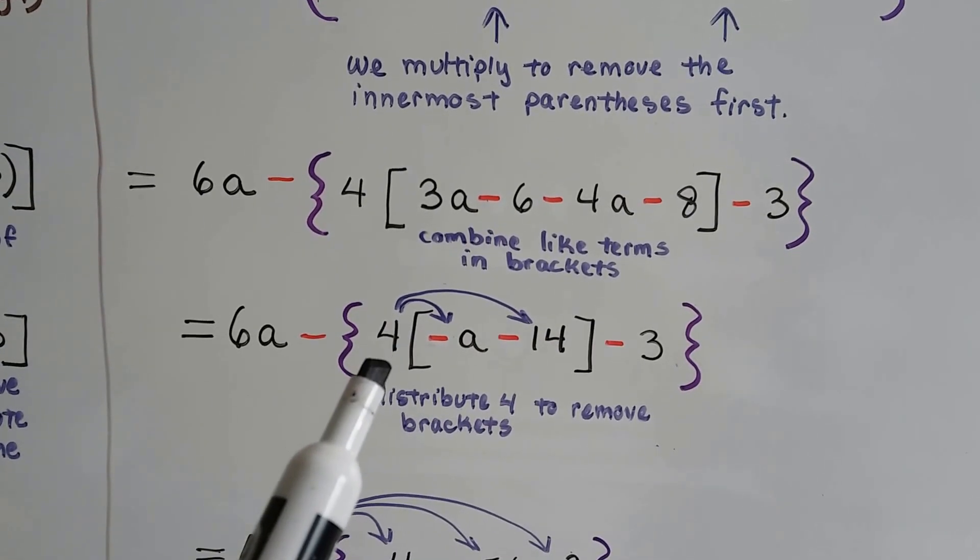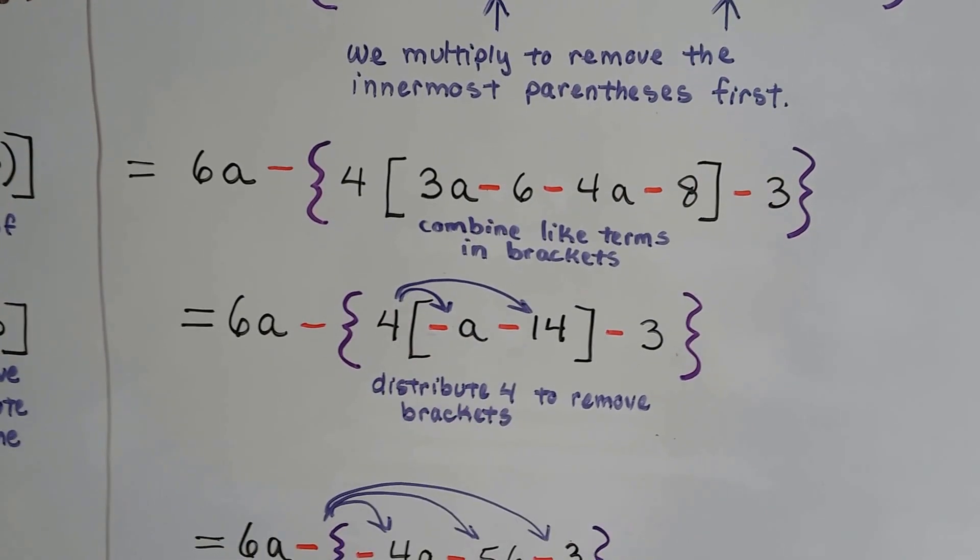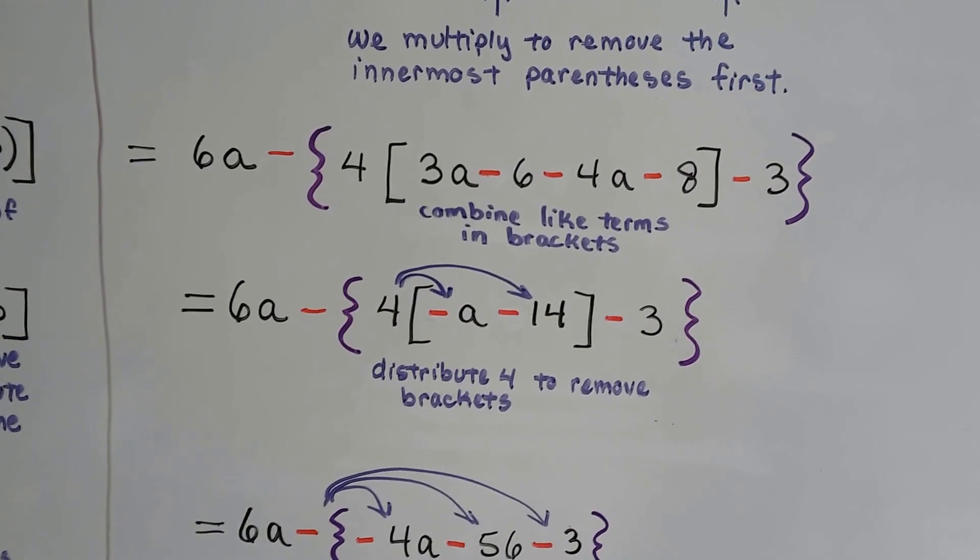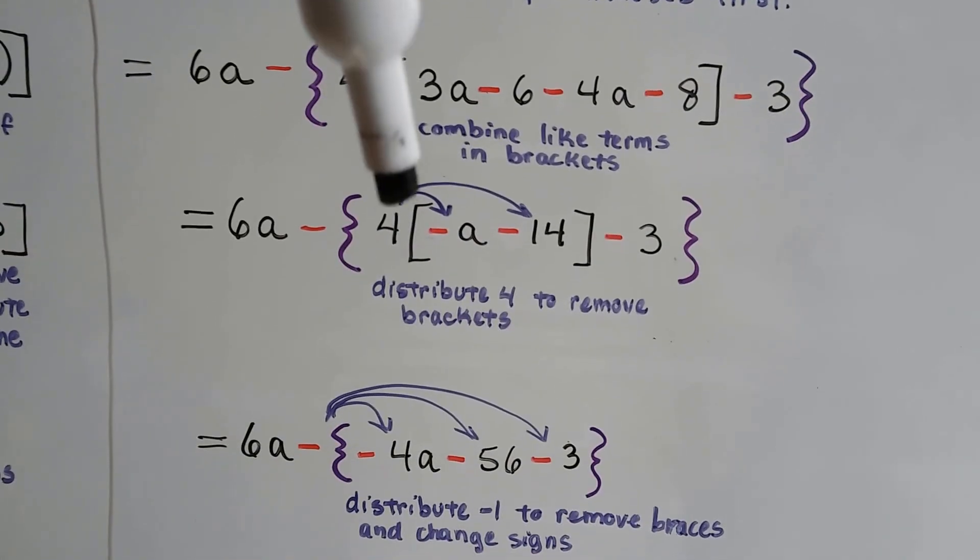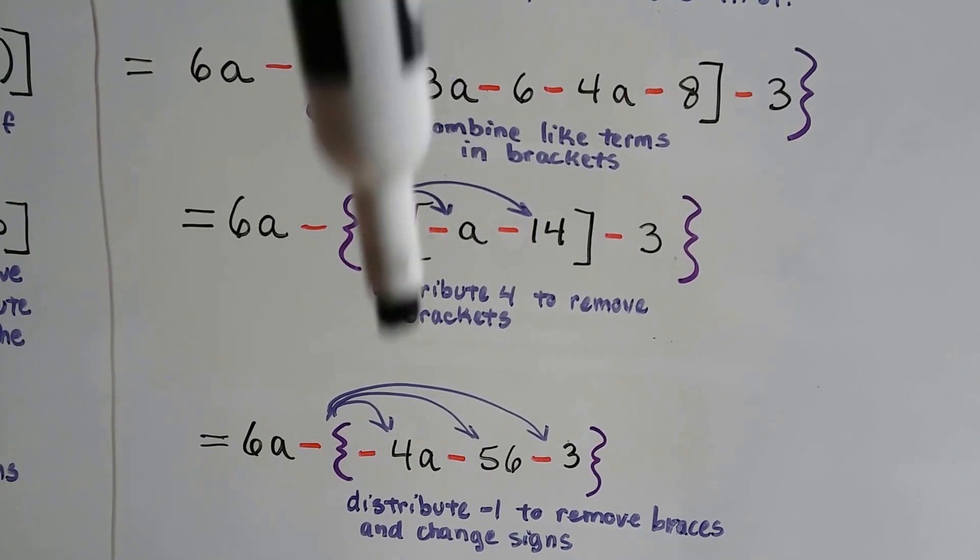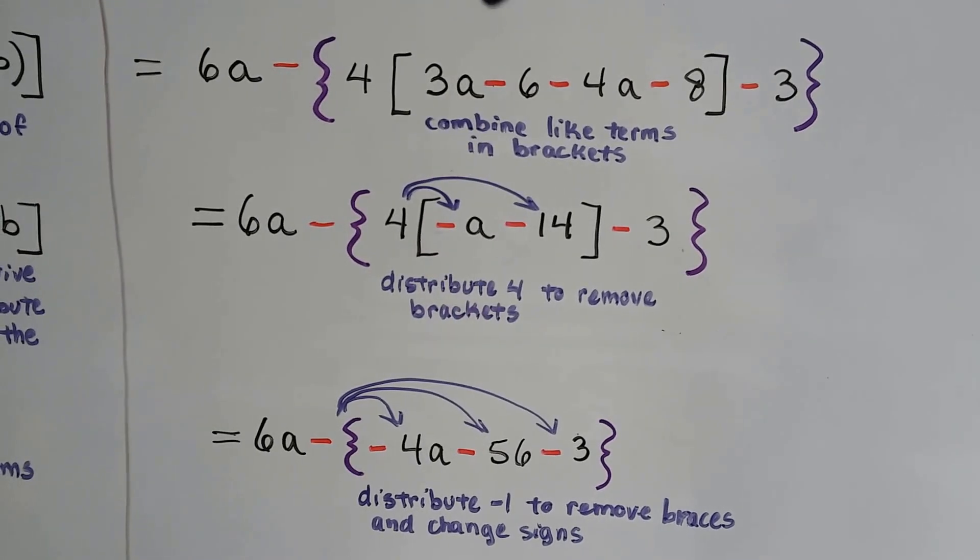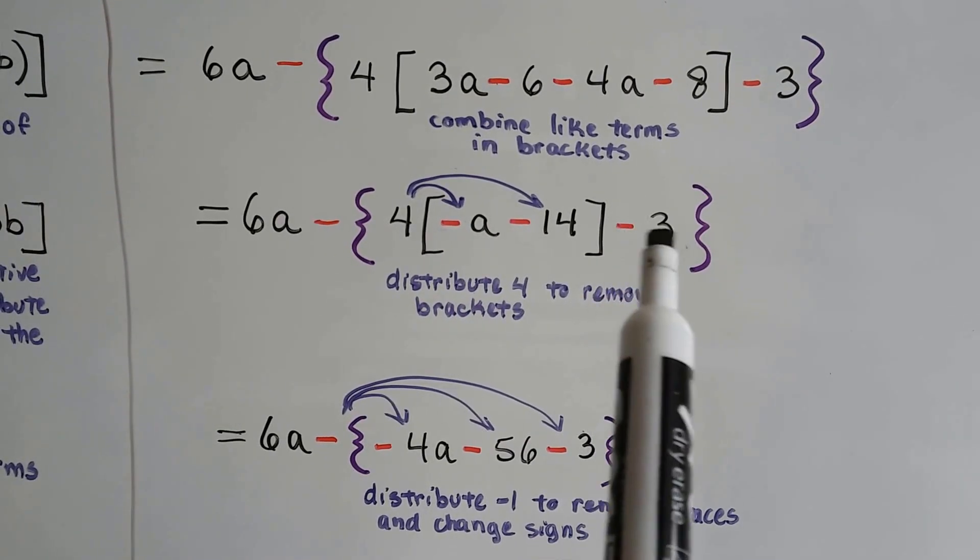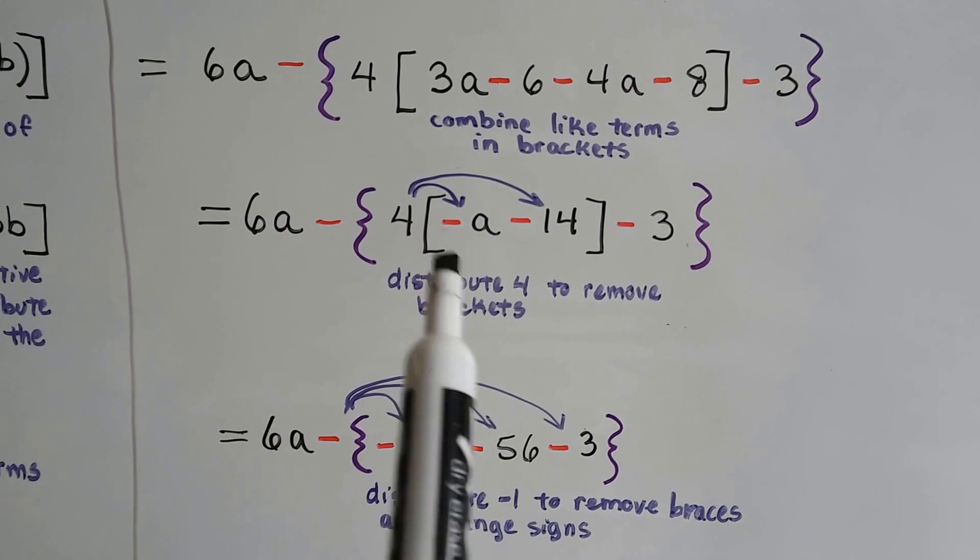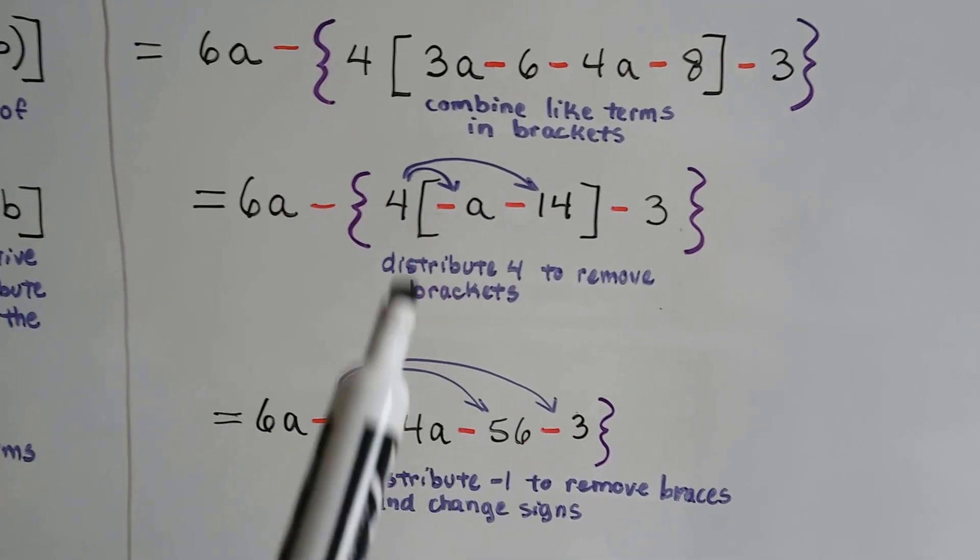Now we can distribute this 4 to each of the terms inside of the brackets to remove the brackets. And that's going to give us a negative 4a. And 4 times negative 14 is negative 56. And then we've got our negative 3 that goes on to the end. So now we've removed the brackets by distributing.